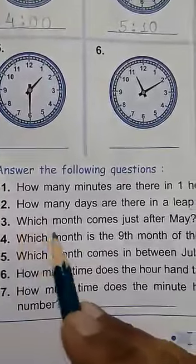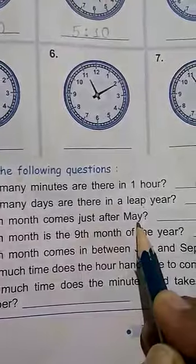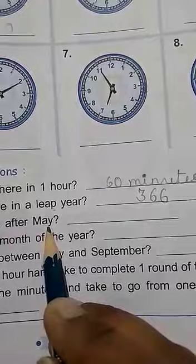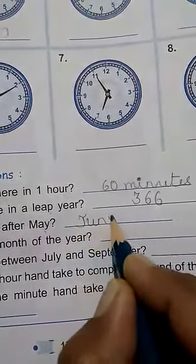Then, third question, which month comes just after May? So which is the month after May? It is June. You will write here June.